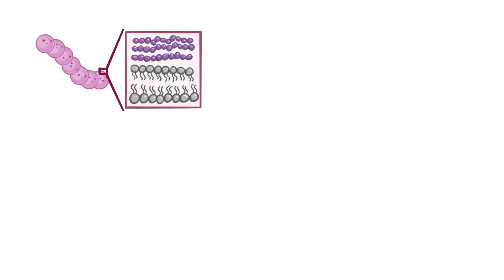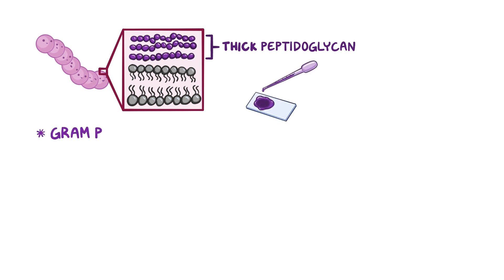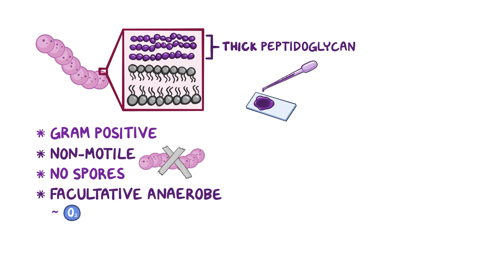Strep pyogenes has a thick peptidoglycan cell wall which takes in purple dye when gram-stained, so this is a gram-positive bacteria. It's non-motile and does not form spores, and it's also facultative anaerobic, meaning that it can survive in both aerobic and anaerobic environments.